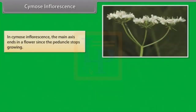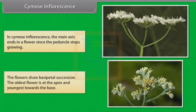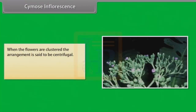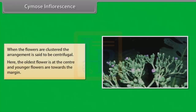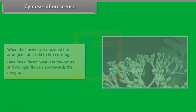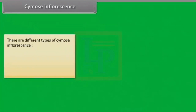In Chymos inflorescence, the main axis ends in a flower since the peduncle stops growing. The flowers show basipetal succession; the oldest flower is at the apex and the youngest towards the base. When the flowers are clustered the arrangement is said to be centrifugal, where the oldest flower is at the center and younger flowers are towards the margin.